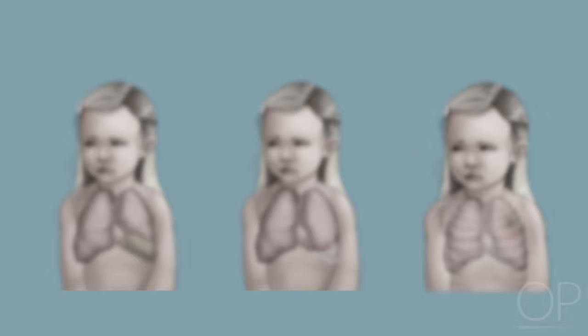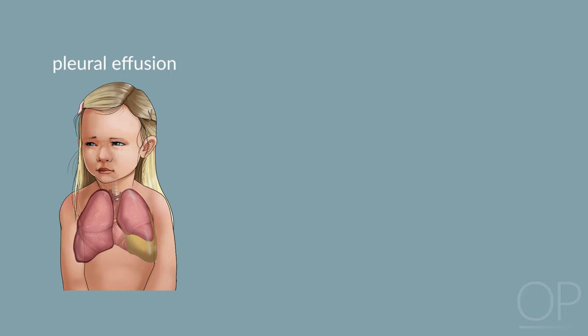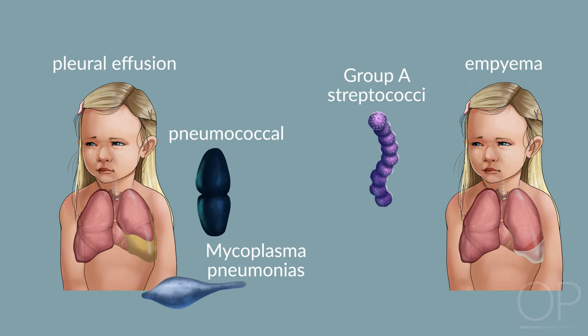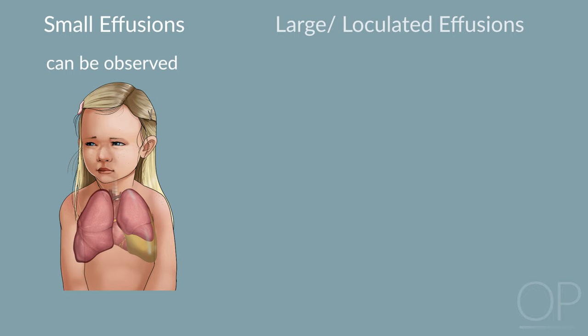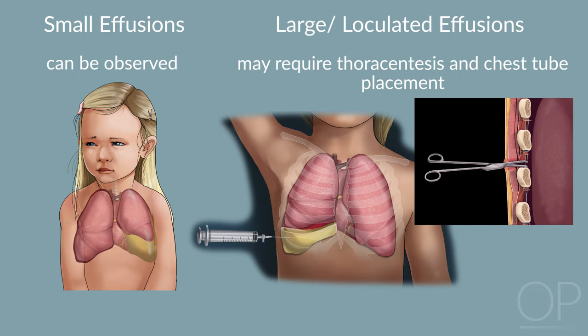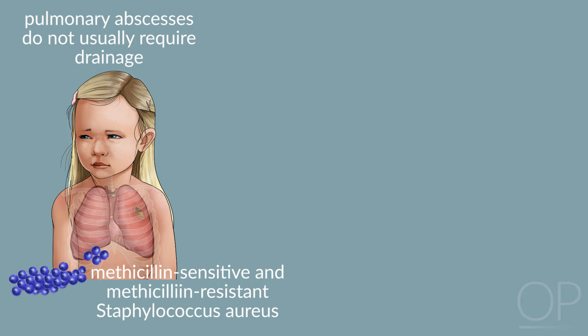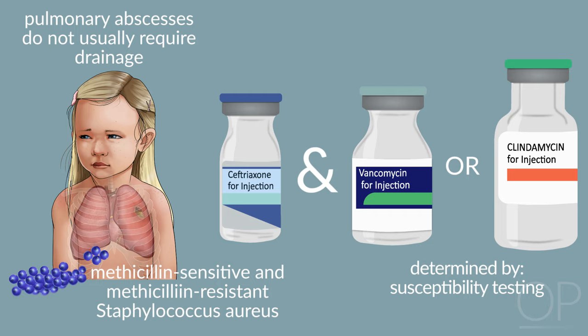Complications. A number of complications can occur in pneumonia, including pleural effusions, empyemas, and abscesses. Pleural effusions are typically seen with pneumococcal and Mycoplasma pneumonias, whereas necrotic pneumonias and empyemas are more associated with group A streptococci and staphylococcal pneumonia. Small, stable effusions can be observed, whereas patients who are ill-appearing or have large or loculated effusions may require thoracentesis and chest tube placement. Pulmonary abscesses do not usually require drainage; methicillin-sensitive and methicillin-resistant Staphylococcus aureus cause the majority of abscesses in otherwise healthy children and should be treated with a third-generation cephalosporin and either vancomycin or clindamycin as determined by susceptibility testing.